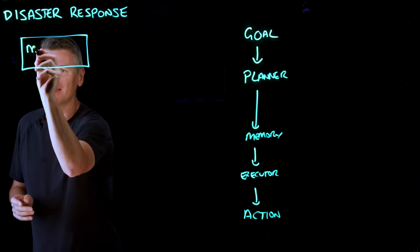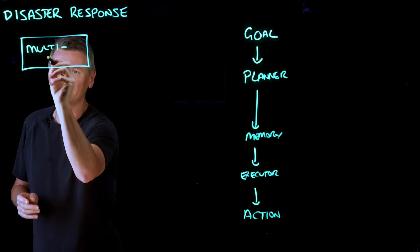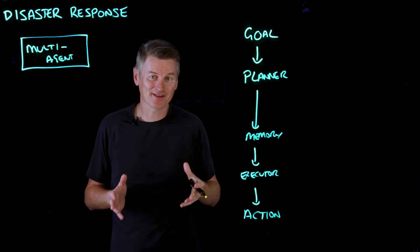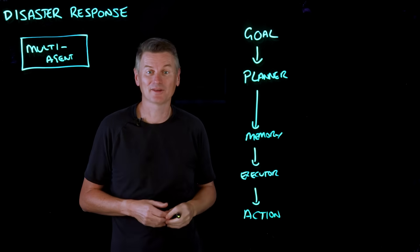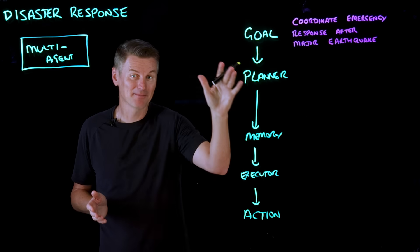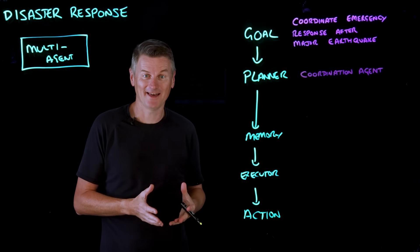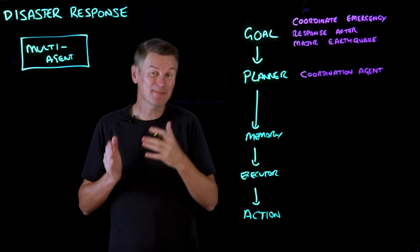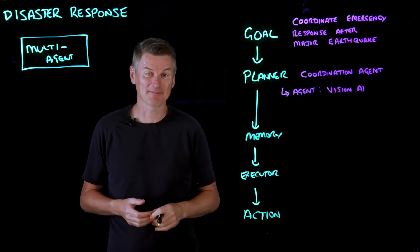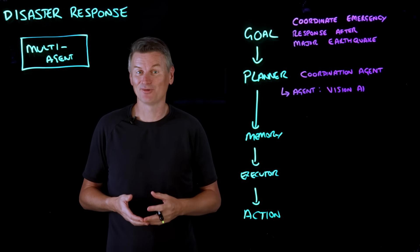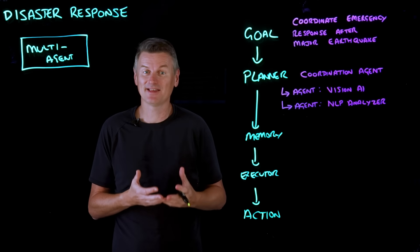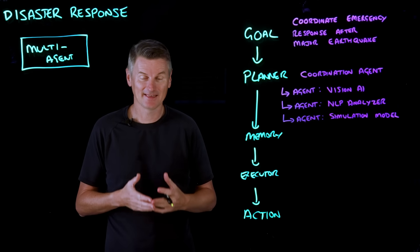And this is where the multiple agent or the multi-agent workflow comes in. So for this use case, let's set a goal to coordinate emergency response after a major earthquake. Now here, the planner is actually a coordinator agent working with specialist agents. So we might have one specialist agent analyzing satellite imagery for collapsed buildings. We might have another that's scanning social media for distress posts. And maybe we've got a third agent, which is a simulation model that forecasts expected damage.